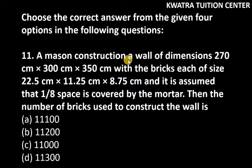A mason constructs a wall of dimensions 270 cm by 300 cm by 350 cm with bricks each of size 22.5 cm by 11.25 cm by 8.75 cm. It is assumed that 1/8 space is covered by the mortar. Find the number of bricks used to construct the wall.